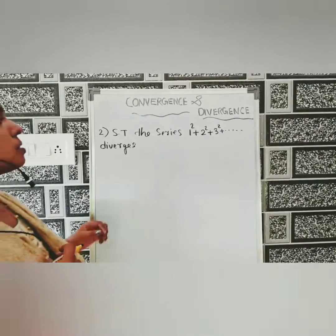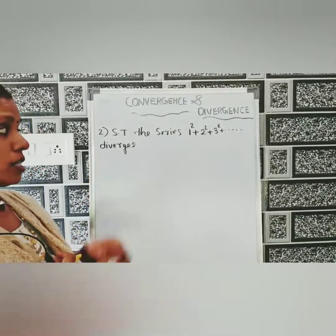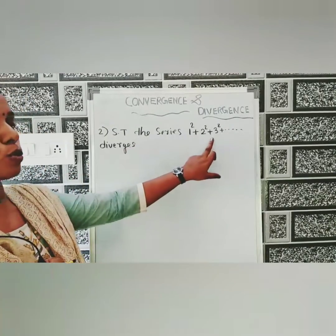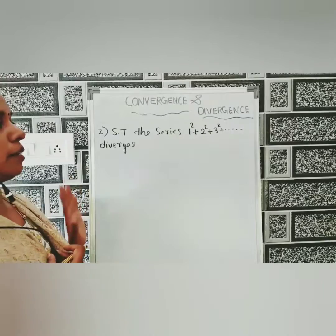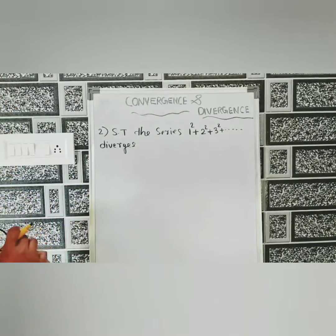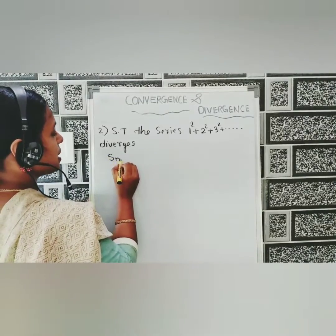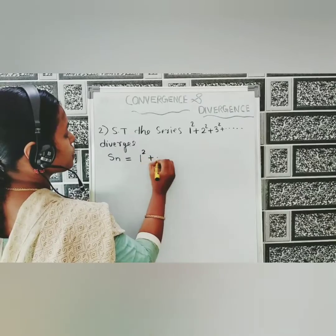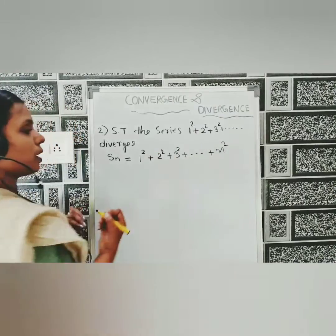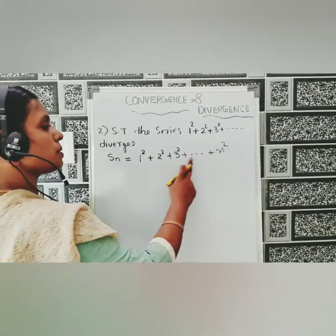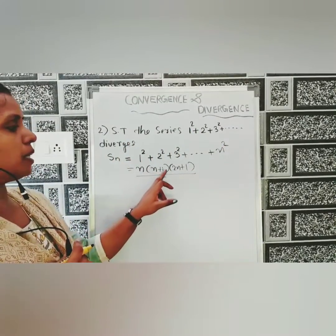Next problem: Show that the series 1² + 2² + 3² + ... diverges. We have to show the given series diverges. The nth partial sum of the given series is s_n = 1² + 2² + 3² + ... + n². We know that its sum is n(n+1)(2n+1)/6.